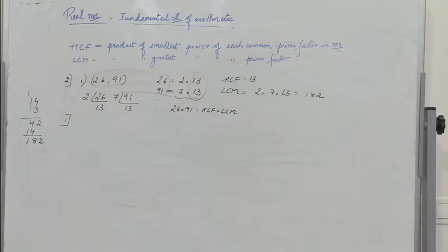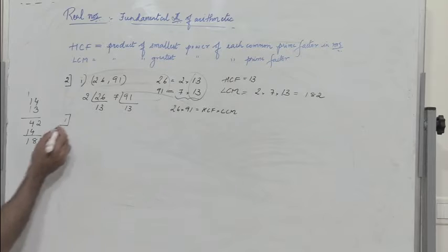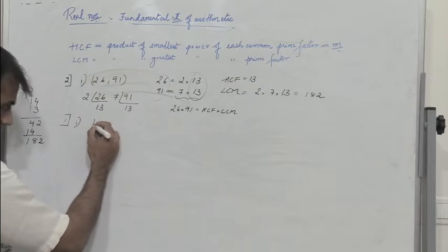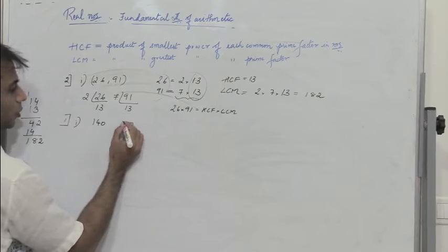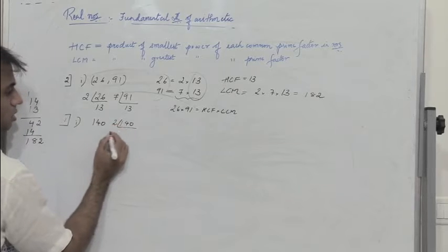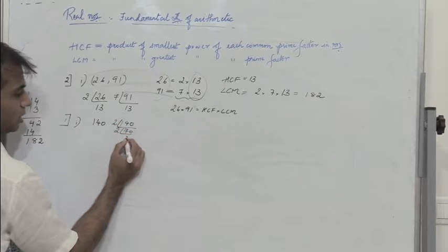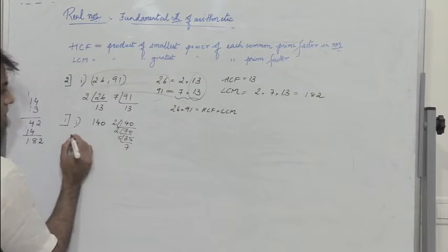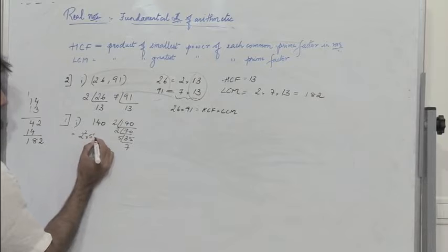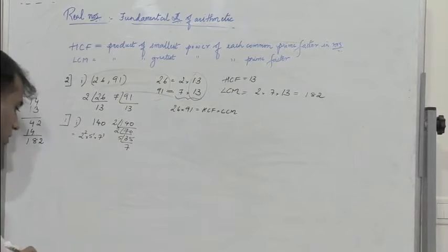Let us finish all the questions in problem 1, where we express a given number as a product of its prime powers. First: 140. Dividing 140 by 2 gives 70, by 2 again gives 35, by 5 gives 7. So 140 = 2² × 5¹ × 7¹.